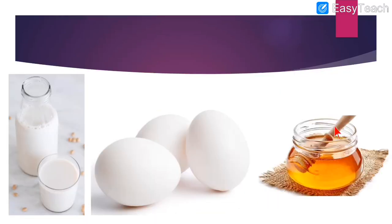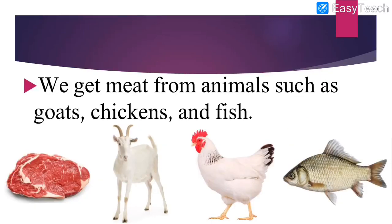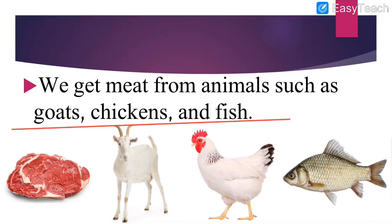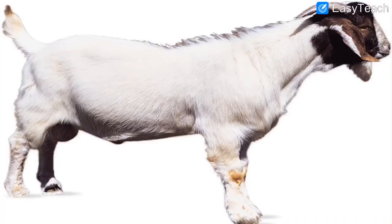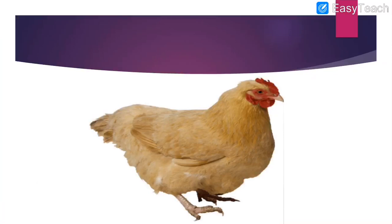We had seen images of these products that animals give us. We also get meat. Where do we get meat from? We get meat from animals like goat, chicken, fish. These are the animals that give us meat. Then goat has very soft furry white-colored skin. Hen gives us eggs, which are also of different colors. We can eat fish and also get meat from fish.